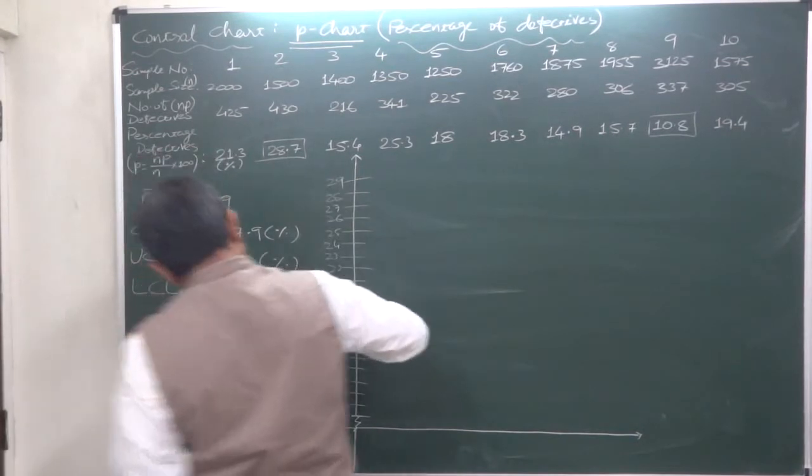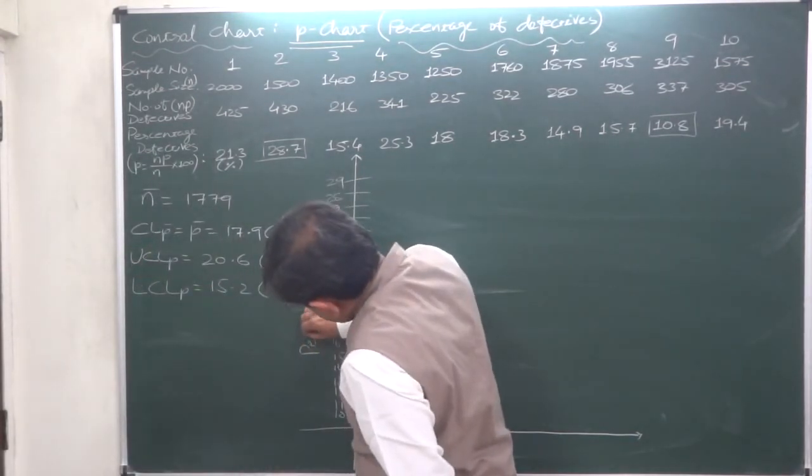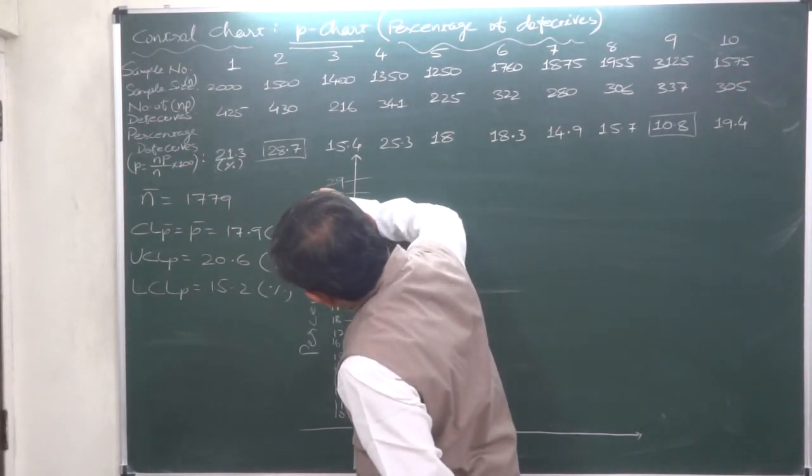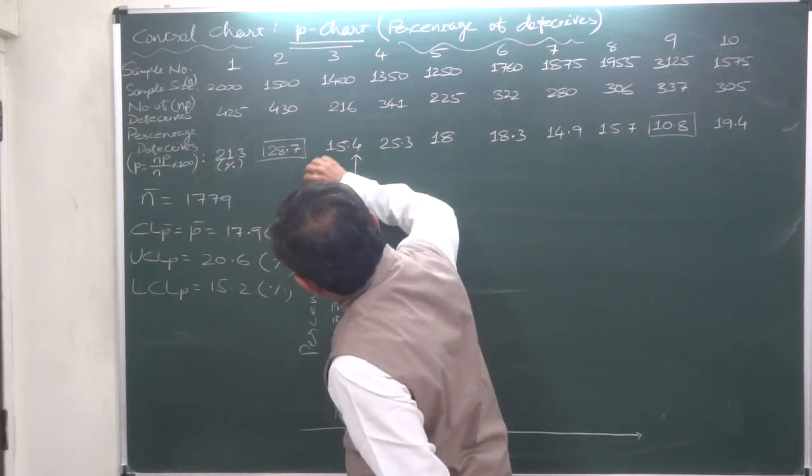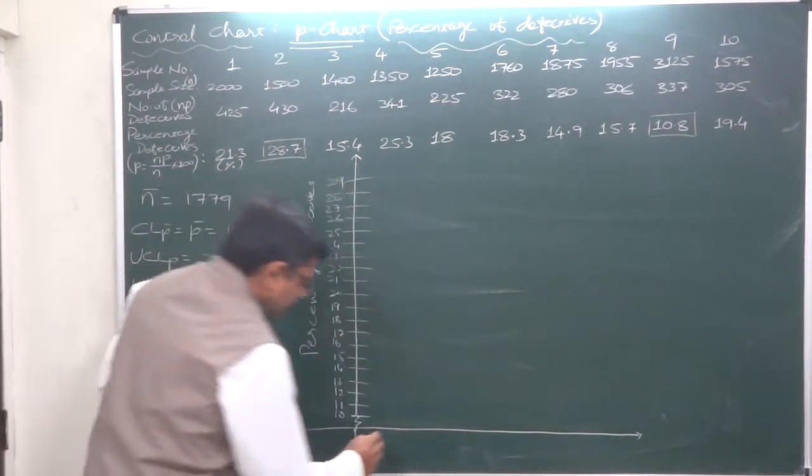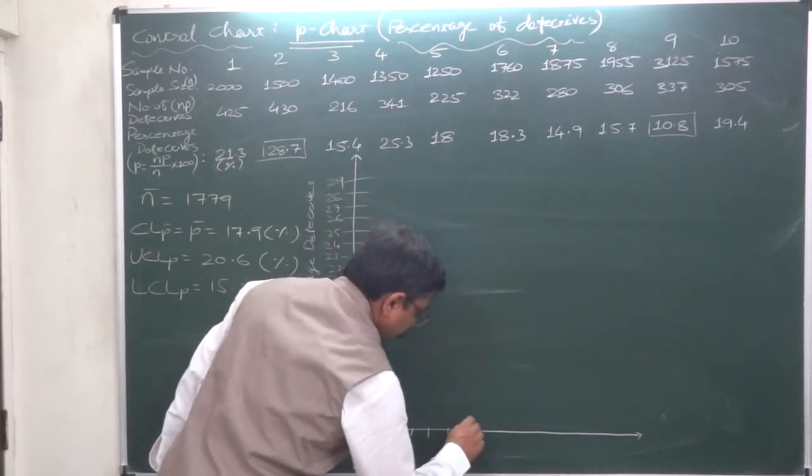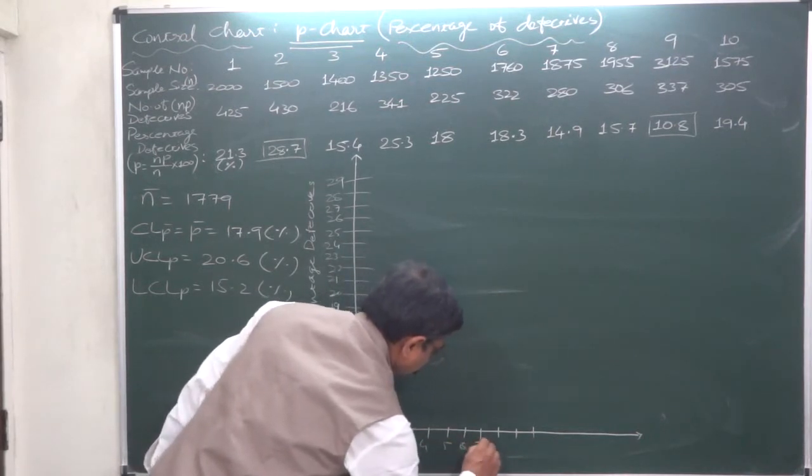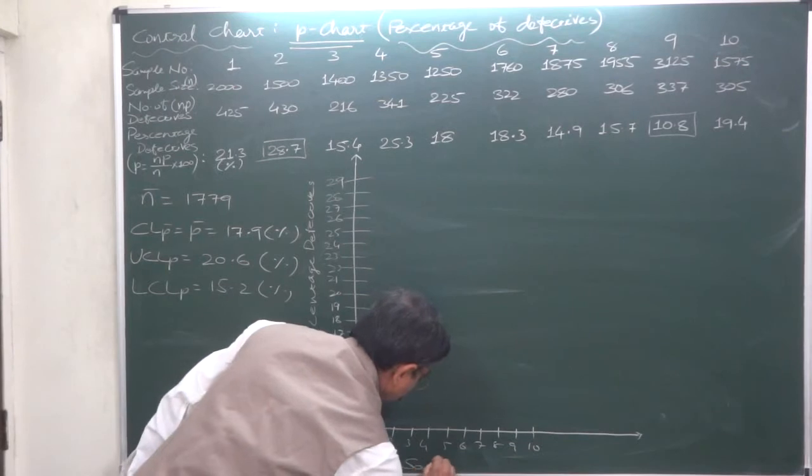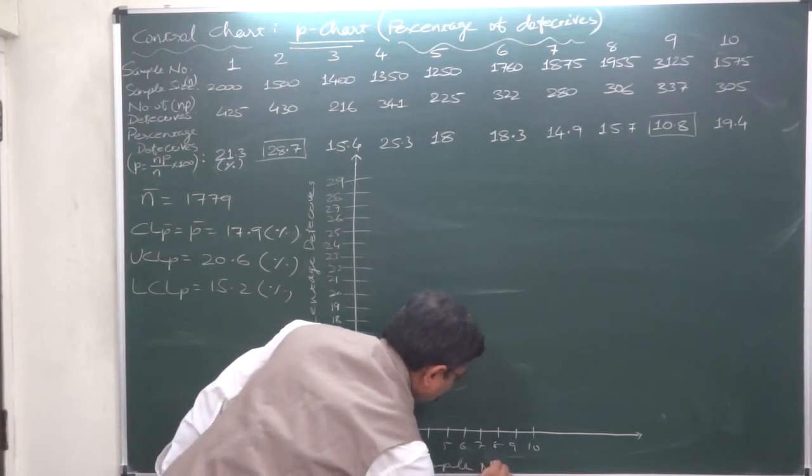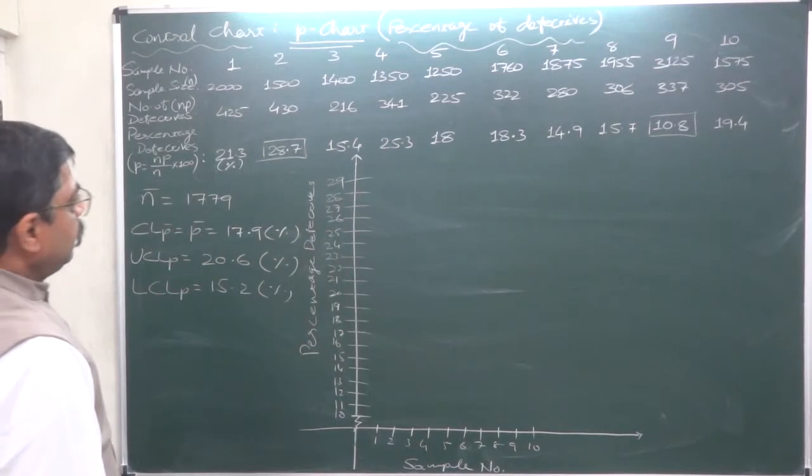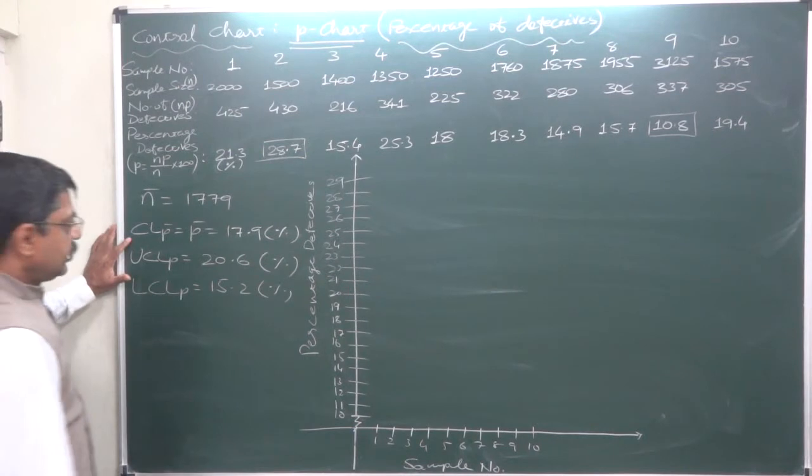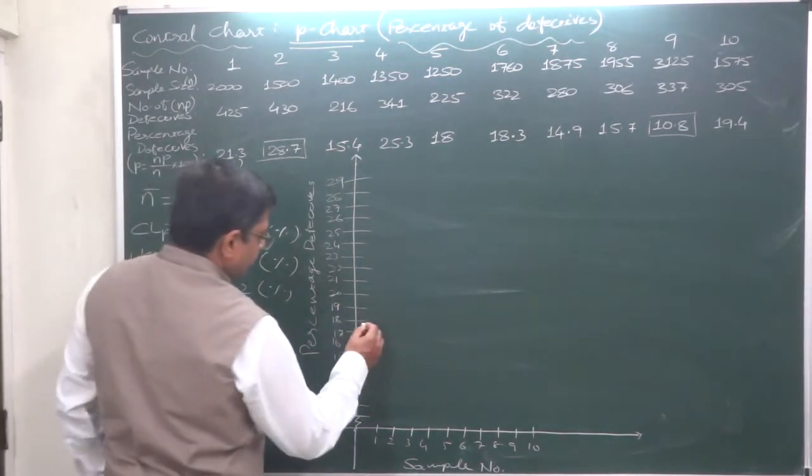These are percentage defectives. The special point of this problem. And samples 1 to 10: 1, 2, 3, 4, 5, 6, 7, 8, 9, 10. Now just plotting, but before that we have to draw three lines. Central line is at 17.9, one millimeter below 18.